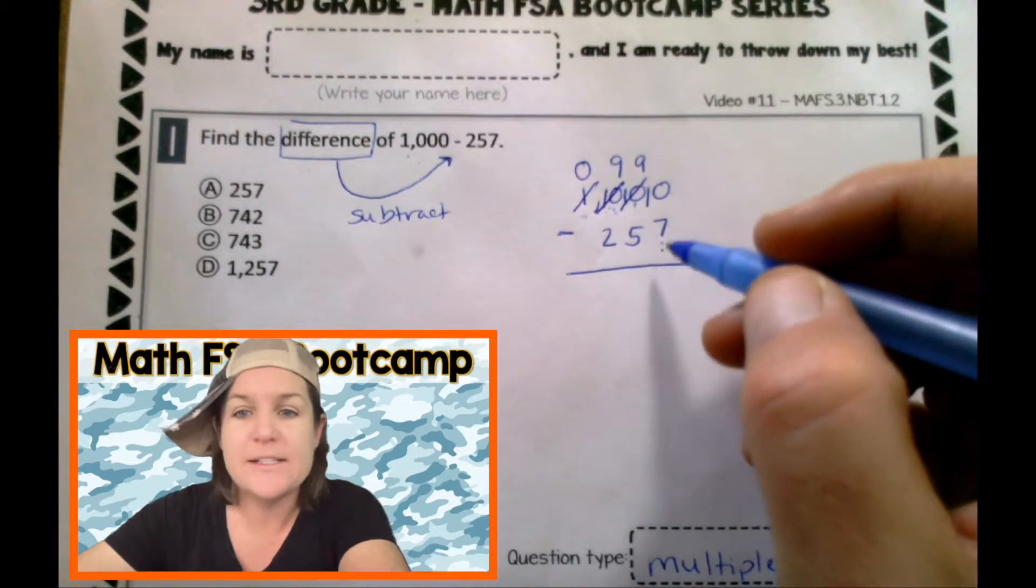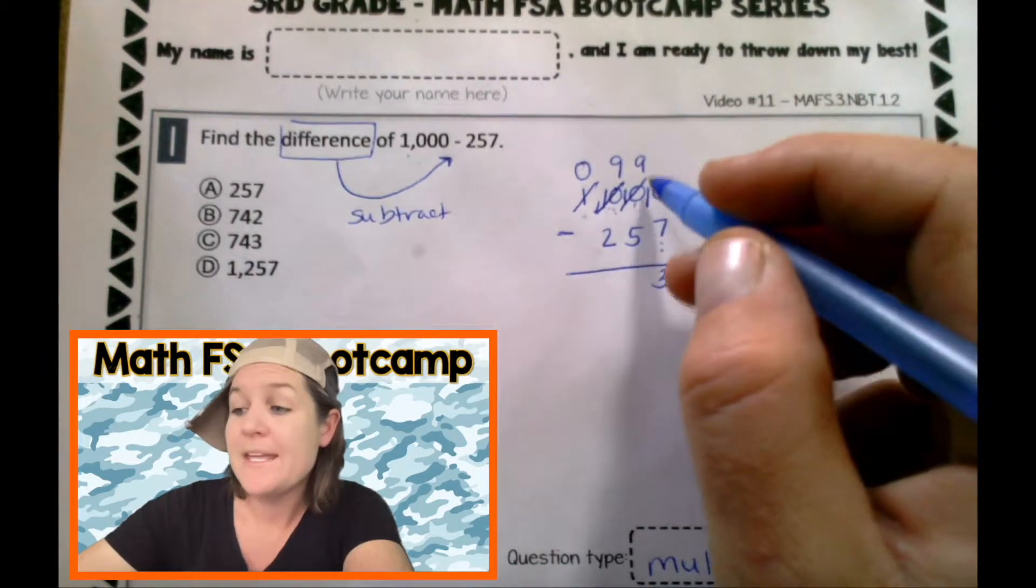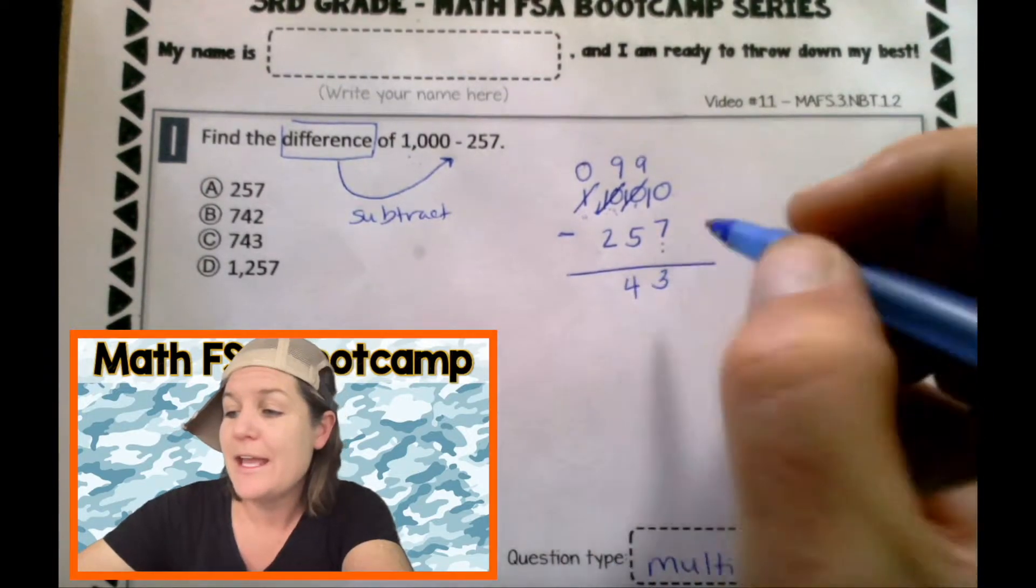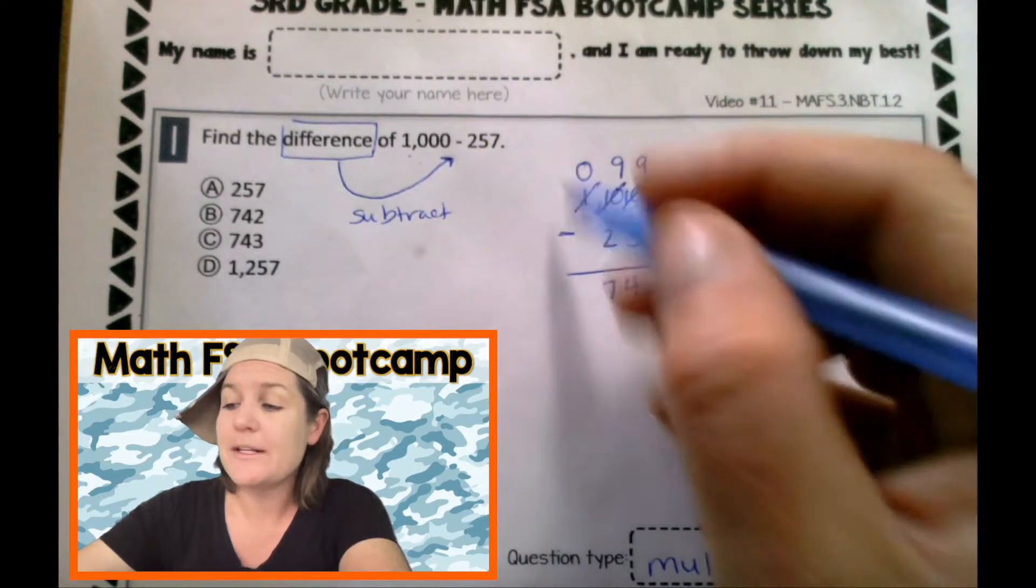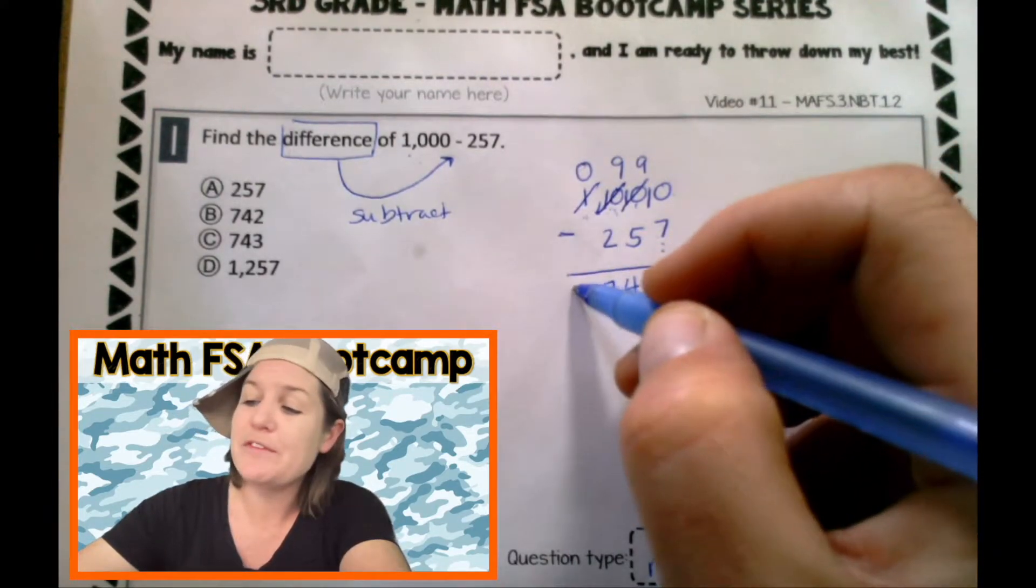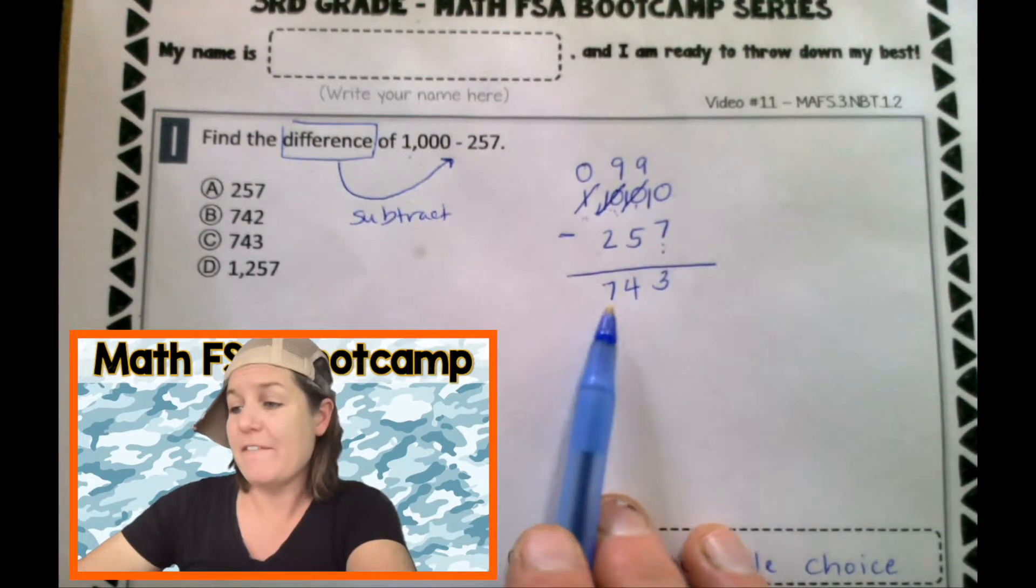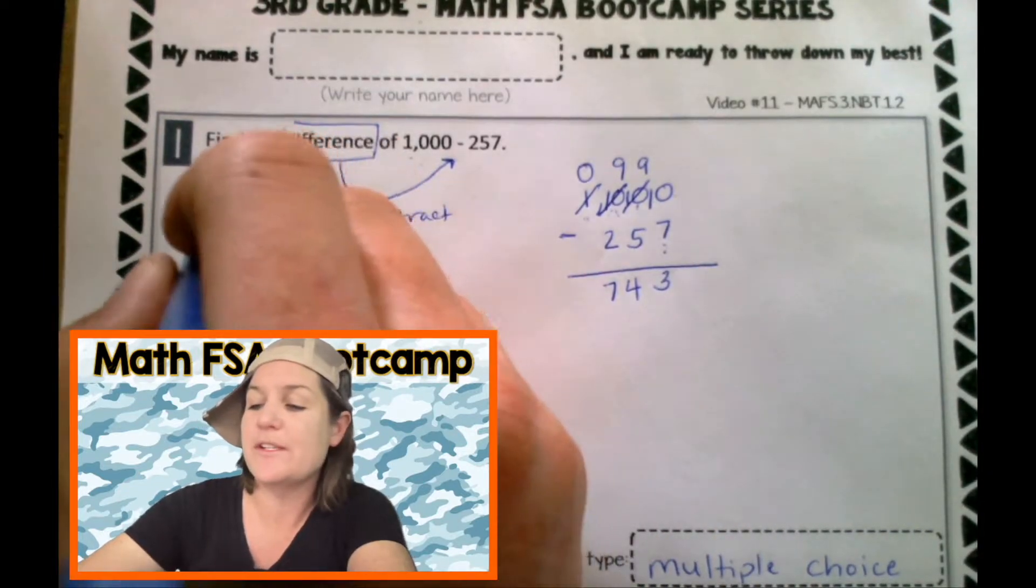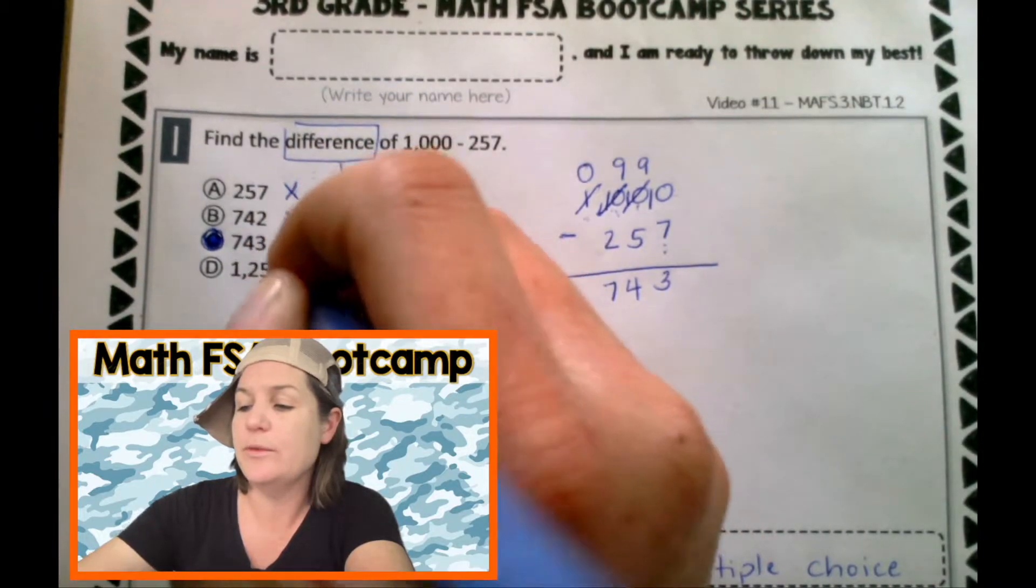Now we are ready to go. Ten minus seven is three. Nine minus five is four. Nine minus two is seven. Zero minus nothing is zero. And we actually don't even need to place it there, which would give us seven hundred forty three. Do you see that as an answer choice? Oh, yes. I see it for choice C.